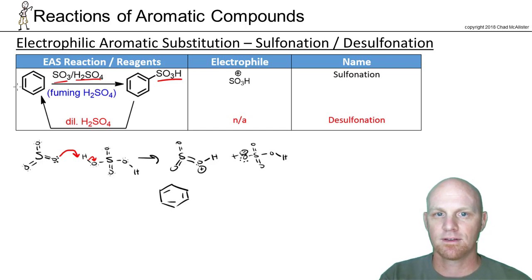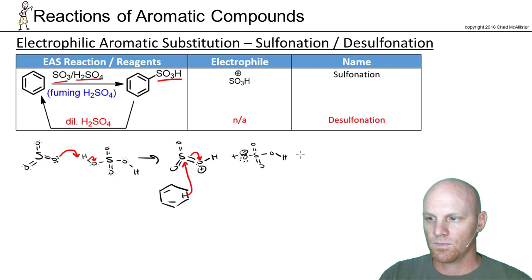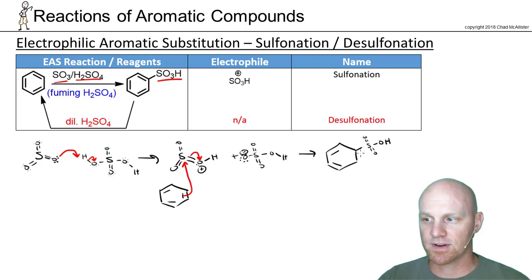We'll draw out the benzene. Benzene is going to come and attack the sulfur, kicking these electrons out to the oxygen. That's your sulfonate group — that's what it actually looks like. We could have just written SO₃H, but it's important to understand what that structure actually looks like.